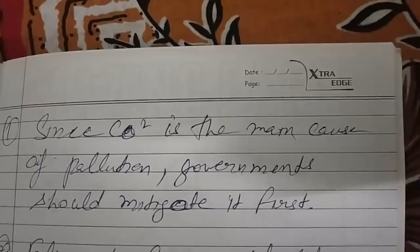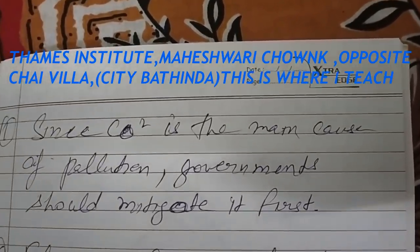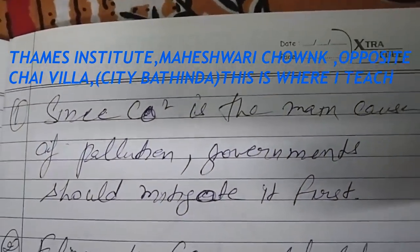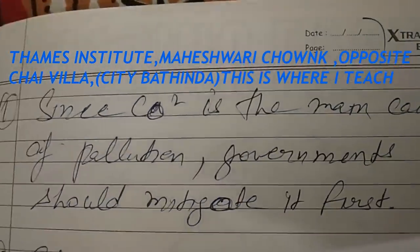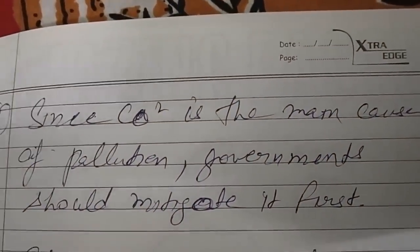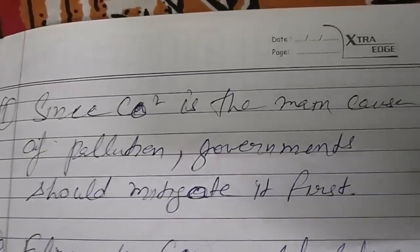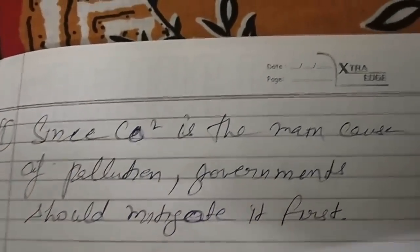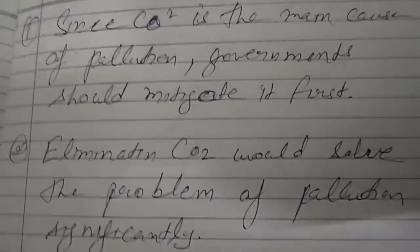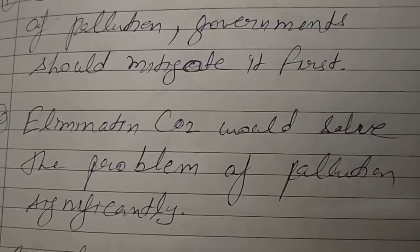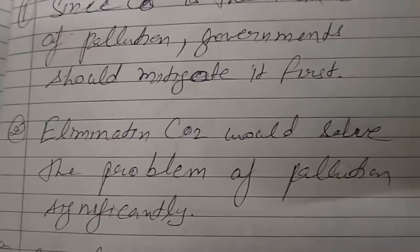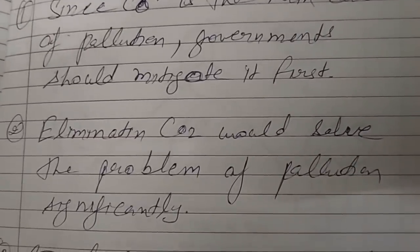'Since CO2 is the main cause of pollution, government should mitigate it first.' This is already a very strong structure. Since carbon dioxide is the main cause of pollution — this comma means 'therefore' — government should mitigate it first. Many videos are available on my channel; links are in the description. Now, 'eliminating carbon dioxide would solve the problem of pollution significantly.'